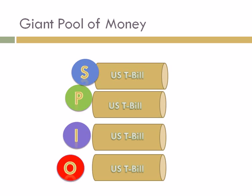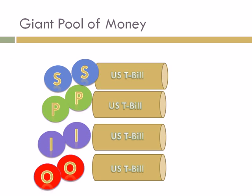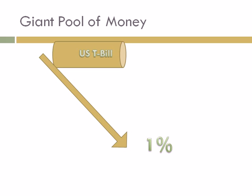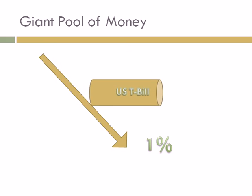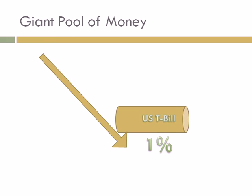But while the giant pool of money had grown to twice its size, this did not correspond to a growth in the number of investments. The number of U.S. Treasury bills issued was still limited. The result was that the giant pool of money was scrambling to find other investment products with similar characteristics. Furthermore, the bursting of the dot-com bubble and September 11 brought about the 2001 recession. To prevent the economy from going under, Federal Reserve Chairman Alan Greenspan dropped interest rates to an all-time low of 1%. Thus, treasury bills and similar investment products were no longer seen as attractive investments.